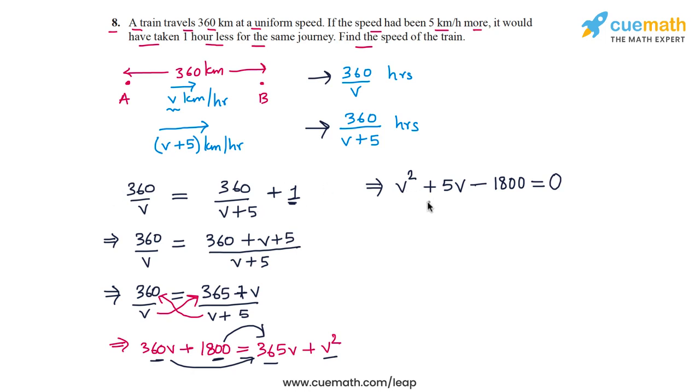Now all we need to do is to solve this equation and find the value of v, which is the speed of the train. To solve this equation I will split the middle term 5v. I note that for the constant term minus 1800, I have 45 into minus 40. This combination gives me minus 1800, and also 45 plus minus 40 is equal to 5, which is the coefficient of the middle term. So I am going to split the middle term 5v as 45v minus 40v.